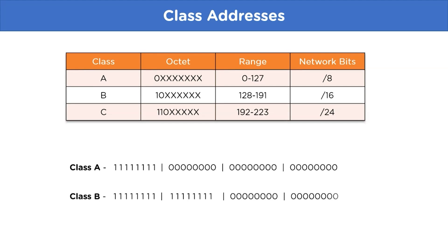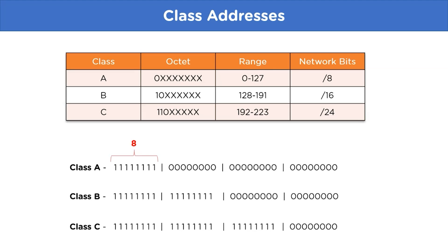To represent each class in binary format: for Class A we have 1s for 8 bits, for Class B 16 bits, and for Class C 24 bits.